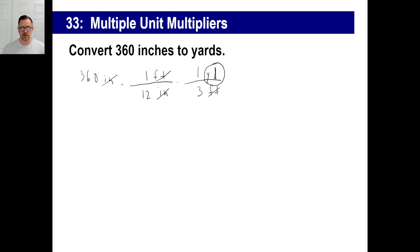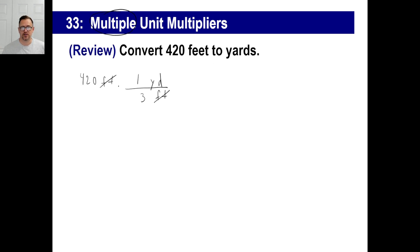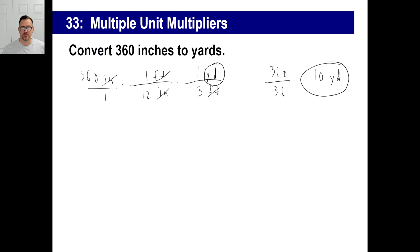Now, we have to just go across. 360 times 1 times 1 is 360. 12, you know, if you want to put a 1 there, that's fine. 1 times 12 times 3, that's 36. Okay, so 360 divided by 36, of course, is just 10. So, we have 10 yards, and there we go. Follows to it. Unit multipliers. See, instead of just doing 1 like this one, you did 2 like that. Follows to it.